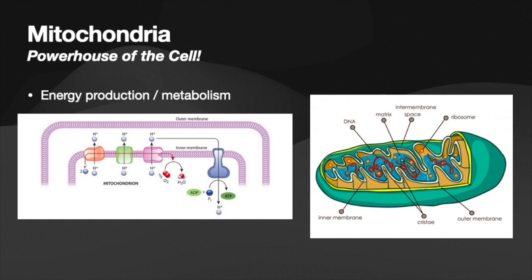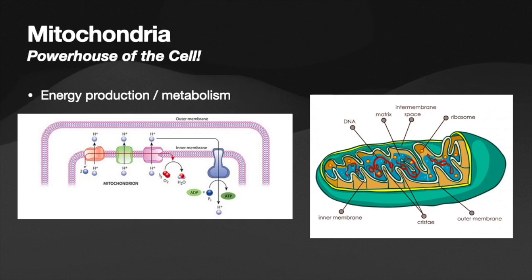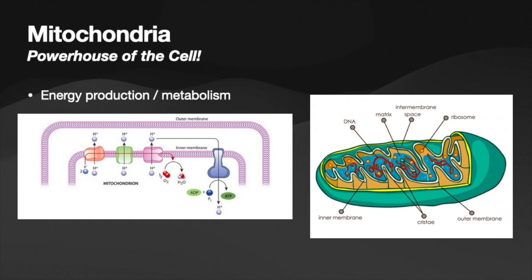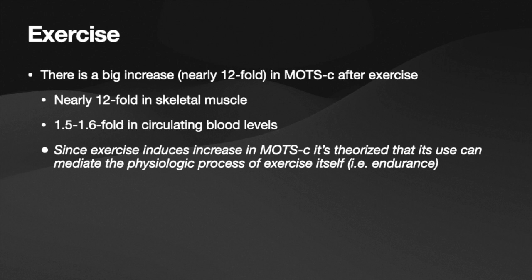So, mitochondria — it is the organelle known as the powerhouse of the cell. You'll see plenty of memes and jokes about it, because this is what science teachers have been saying since the beginning of time. But it's very heavily involved in energy production, metabolism, and free radical defenses. The biggest role, essentially, is production of ATP — the energy that the body uses.